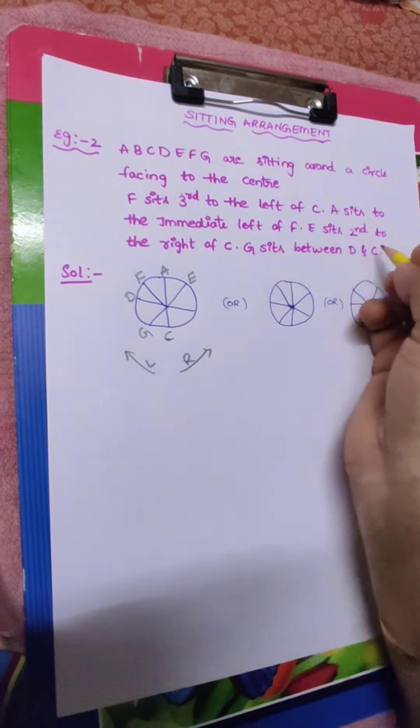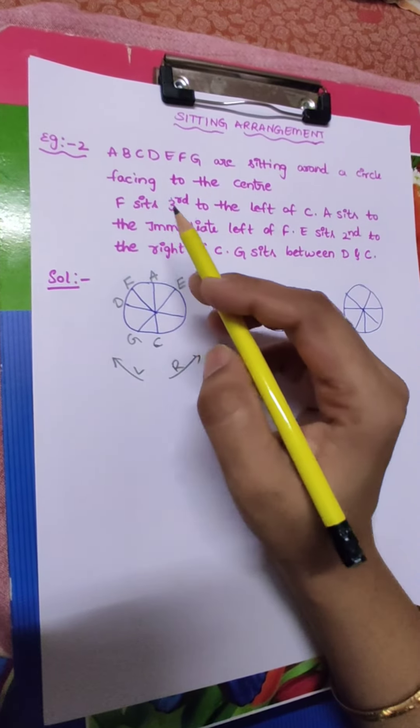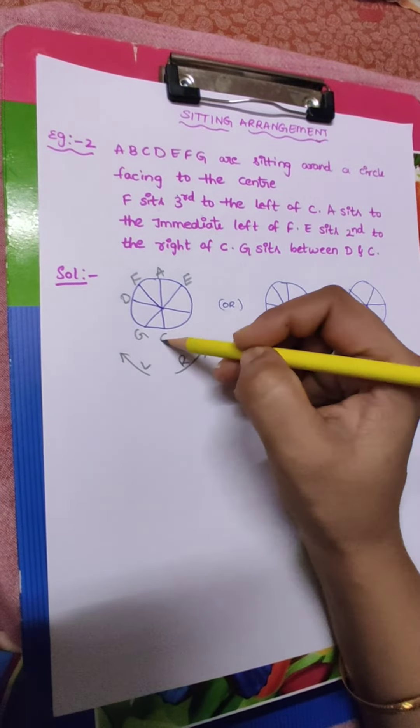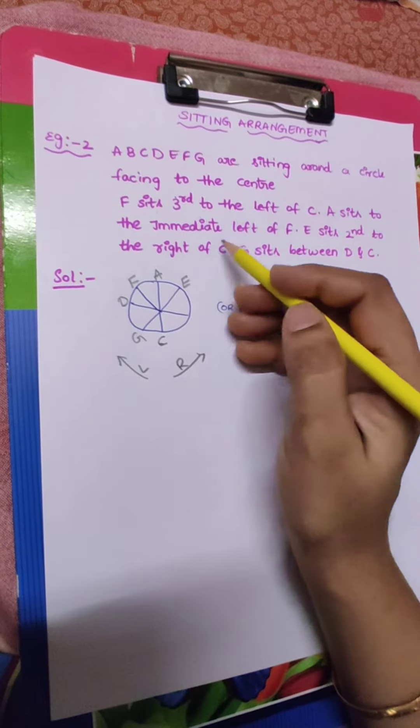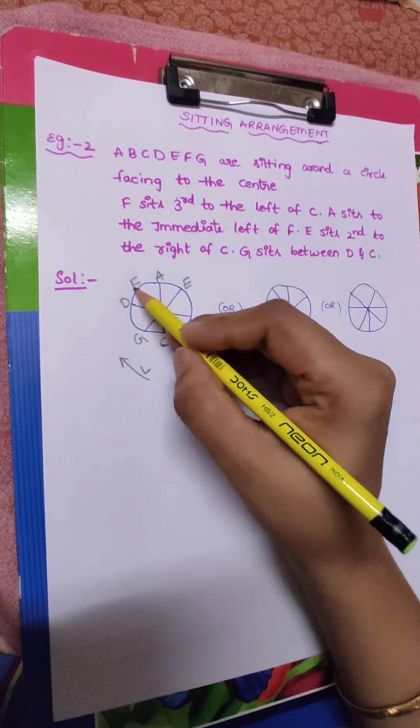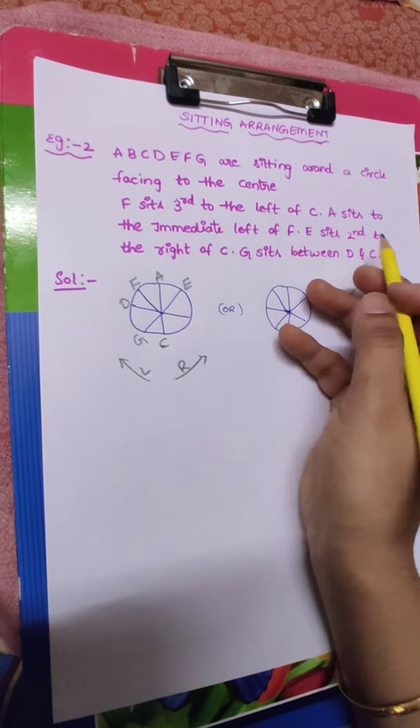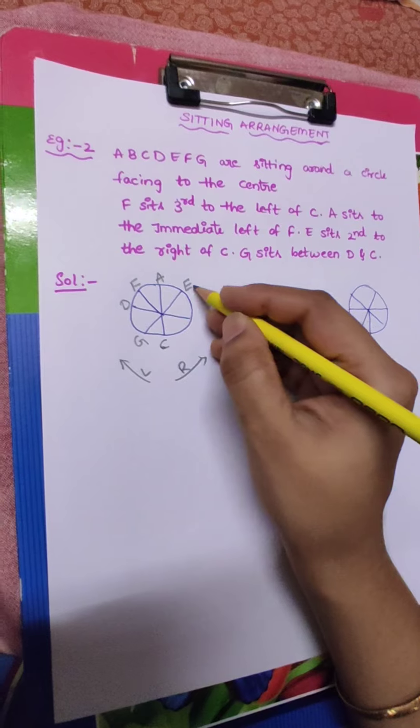Now again I am checking whether our answer is right or wrong. F sits third to the left of C - first left, second left, third left. Correct. A sits to the immediate left of F - F, immediate left, A. E sits second to the right of C - first right, second right, E.